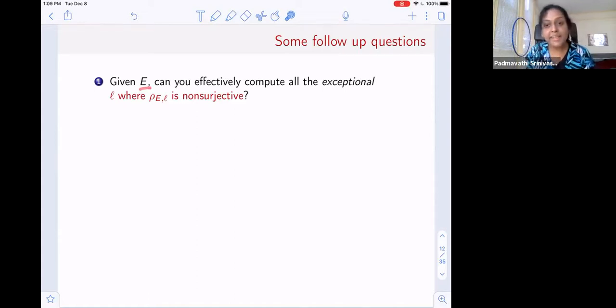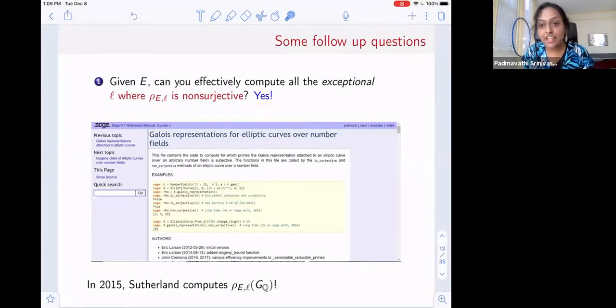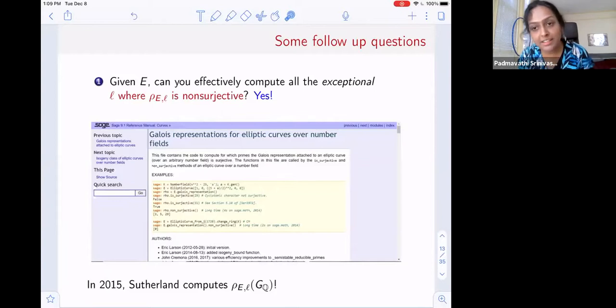The moment I tell you something is true for almost all L, you're very tempted to ask the next natural question. If I give you an elliptic curve, if I give you an equation y squared equals F, can you actually tell me what the exceptions are in this theorem? Can you find all the finitely many L where rho_E,L is non-surjective? So this explains the exceptional I had in my title. For elliptic curves, the answer is yes. And it's actually implemented for number fields. So here's a snapshot from what you can see on LMFDB. And you can do more than just say whether the representation is surjective or not, you can actually tell you what the image of the Galois group is.